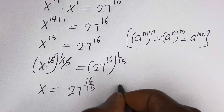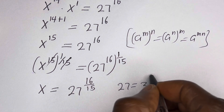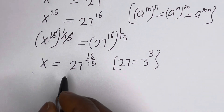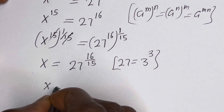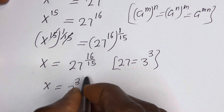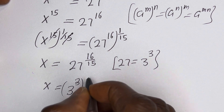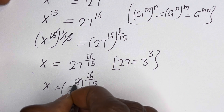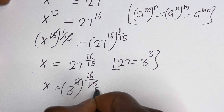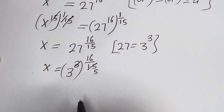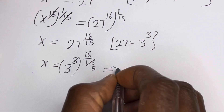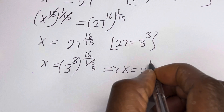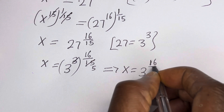Then 27 is equal to 3 raised to power 3. This can be written as S is equal to 3 raised to power 3, to the power of 16 over 15. And this is S is equal to 3 raised to power 16 over 5.